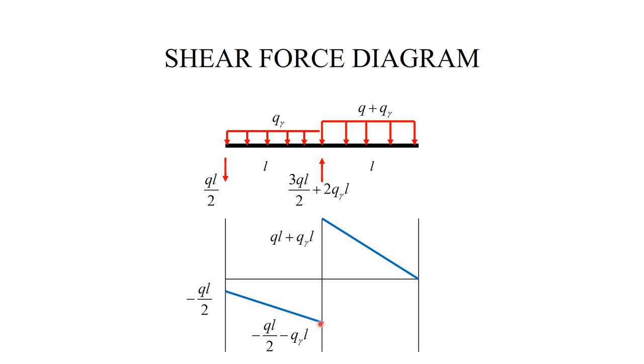At this point, there is a jump to the value of Q L plus Q gamma L, and then it proceeds with the slope minus Q minus Q gamma. And it arrives at zero. Of course, I like having zero here, because there is no force applied at this end.